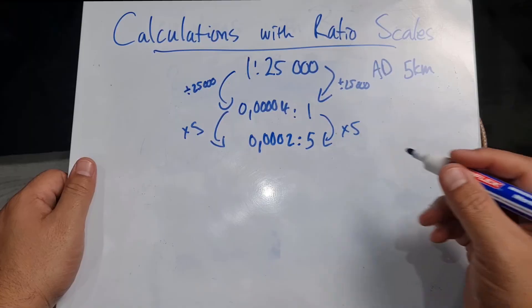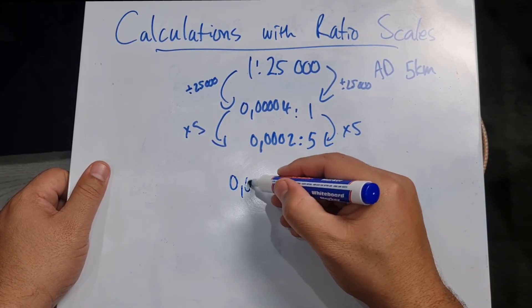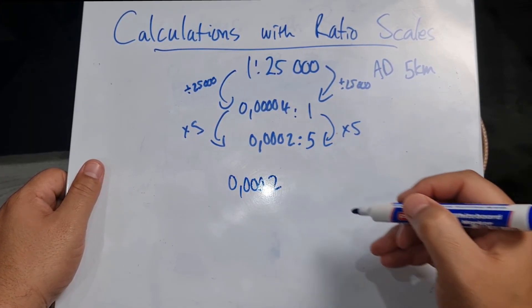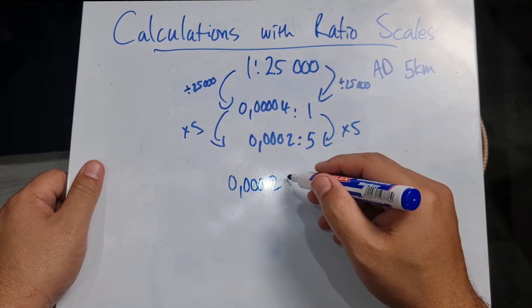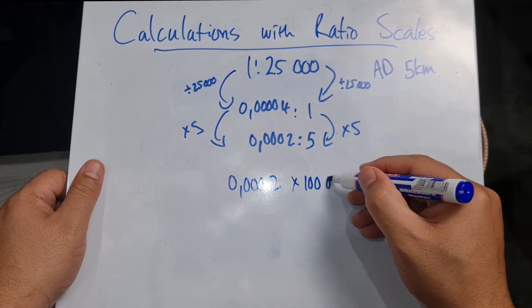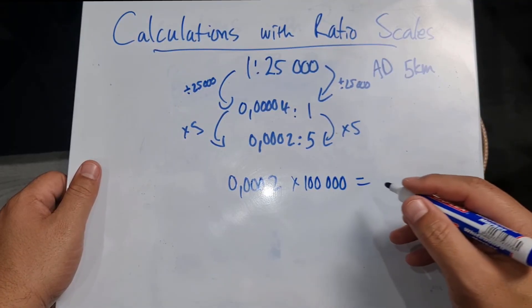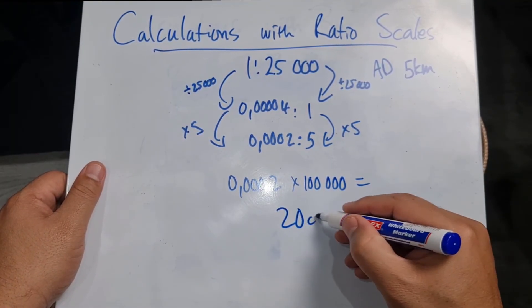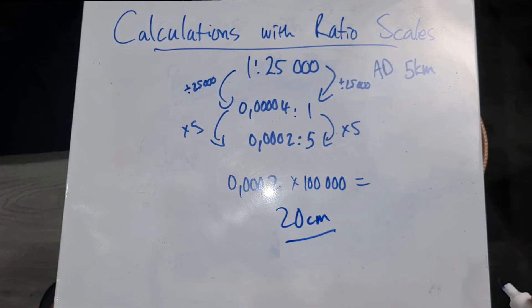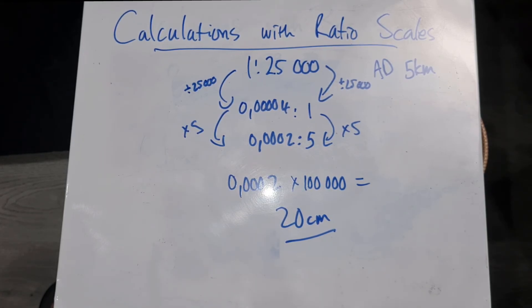Now I'm going to take this answer and multiply it by 100,000 to convert to centimeters, and that'll end up being 20 centimeters. So I hope this helps you to understand how to calculate with ratio scales, whether we are looking to get the actual distance or the map measurement.